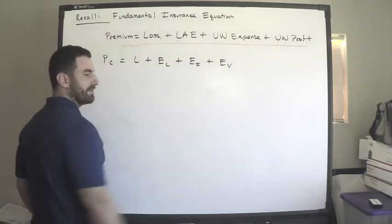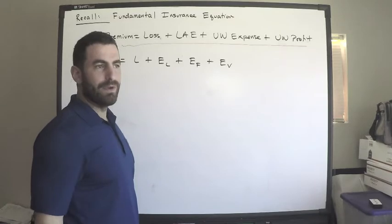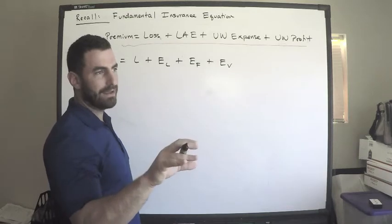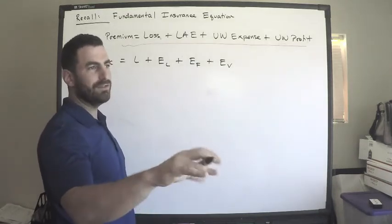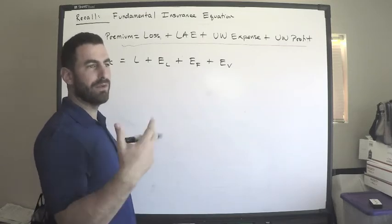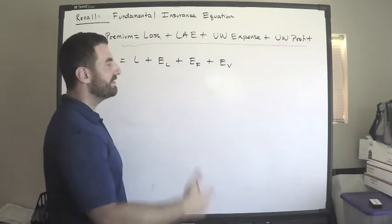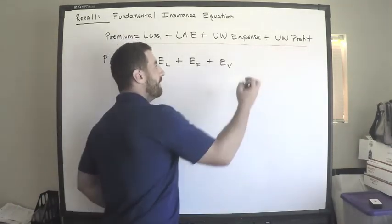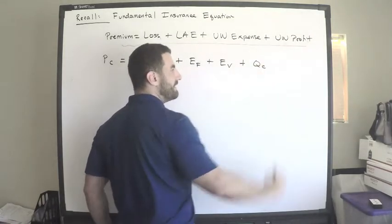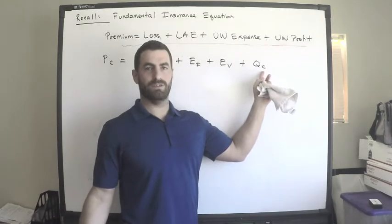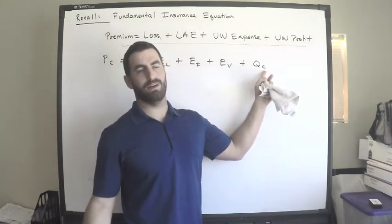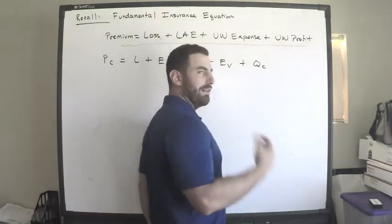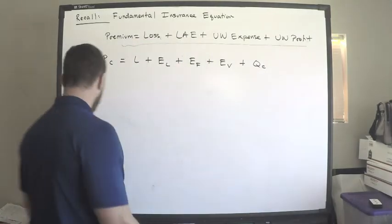Okay, so real quick, fixed expenses could be things like the overhead costs for renting a building or purchasing a building. A variable expense could be things like commissions. Remember, in underwriting expense we had the commissions and brokerage. The money that we pay for agents getting us business usually depends on how much they write, and we usually want them to write favorable business, profitable business, so it's going to depend on premium. So some of our expenses are fixed and some of our expenses are variable. Now underwriting profit, I'm going to write it actually as Qc. This is going to be the profit provision or profit ratio where premium's a denominator at current rates. Everything is at current. Okay, so let's continue with this.